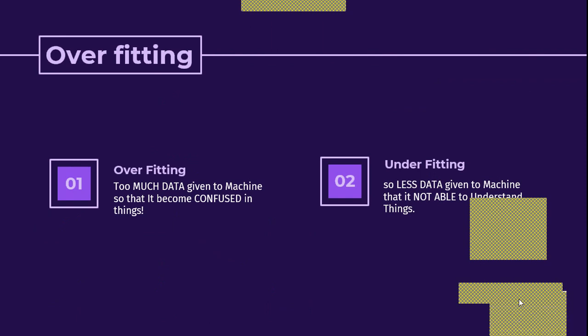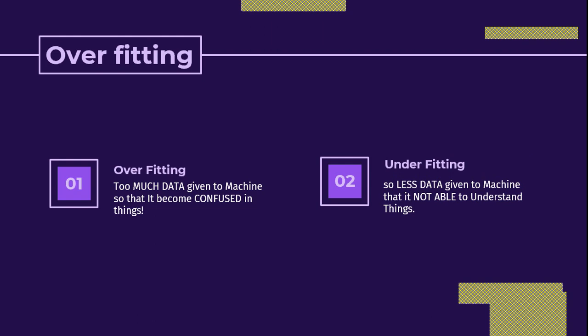Now let us look at overfitting and underfitting. This problem occurs when we are using any machine learning algorithm, not just decision trees. Overfitting is when you give too much data to the machine so it becomes confused. Underfitting is when you give very little data to the machine learning algorithm and it is not able to understand.